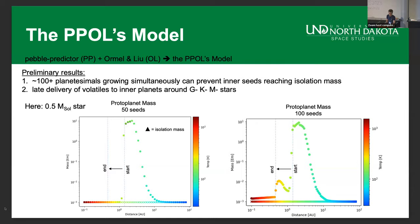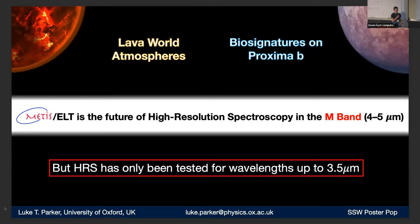Hi, I'm Luke Parker from the University of Oxford. My poster is about high-resolution spectroscopy specifically in the M band, between about four to five microns. We're really interested in this because METIS, one of the first-light instruments for the European Extremely Large Telescope, will be observing in this wavelength region and has the potential to study exciting science cases — for example, looking at hot world atmospheres or biosignatures on our nearest rocky worlds. The problem is that high-resolution spectroscopy methods have only been tested up to about 3.5 microns, so this is uncharted territory with real problems from thermal emission and telluric contamination.